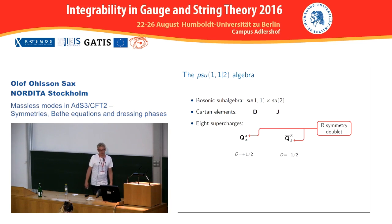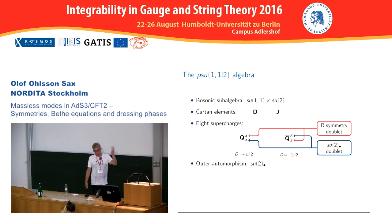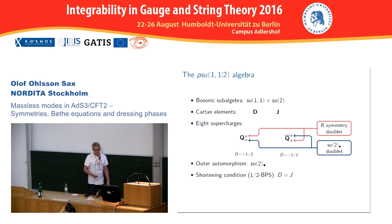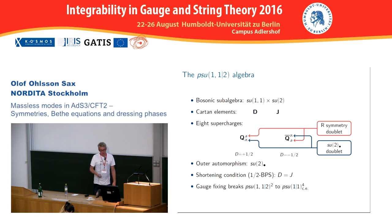This extra SO(4) I decompose into two SU(2)s, which I call SU(2)_bullet and SU(2)_circle — just the SO(4) that rotates the four R4 directions. The PSU(1,1|2) algebra has bosonic subalgebra SU(1,1)×SU(2): the SU(1,1) is part of the conformal symmetry and SU(2) is the R-symmetry. There are eight supercharges forming doublets under the R-symmetry and under the outer automorphism SU(2)_bullet. When we fix uniform light-cone gauge, the symmetry is broken to PSU(1,1|2)^4 which then gets a central extension.